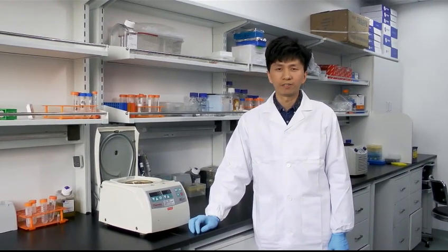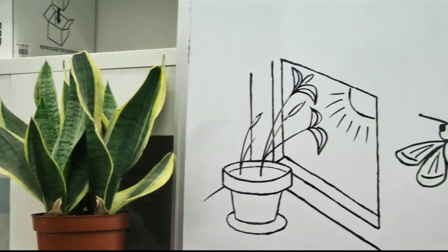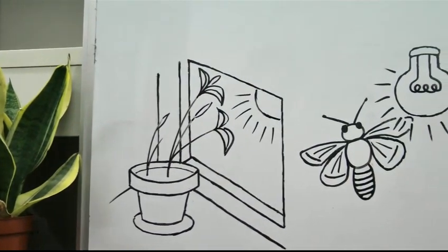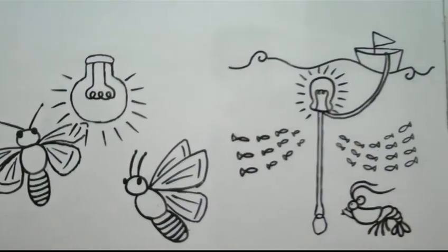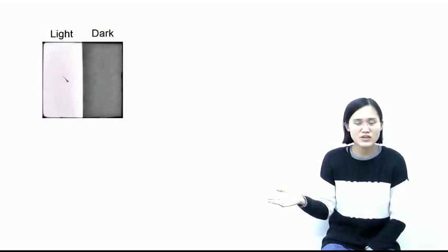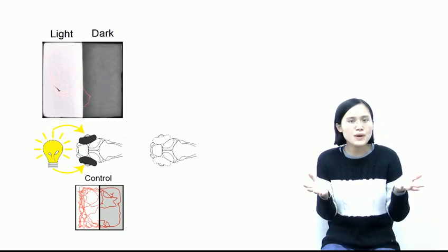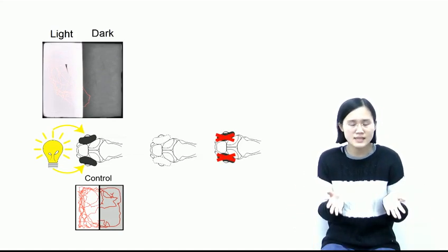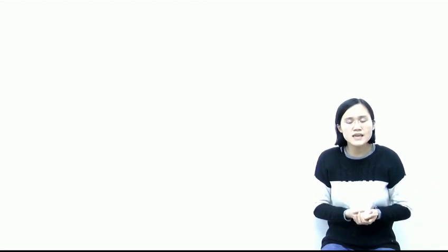At the beginning of our study, we explored the light-preference behavior in zebrafish larvae. Light-preference behavior is an evolutionarily conserved innate behavior found throughout the animal kingdom. Zebrafish larvae show robust light-preference behavior, and it depends on visual input from the eyes. When we removed both eyes or silenced retinal ganglion cell function, light-preference was markedly impaired.